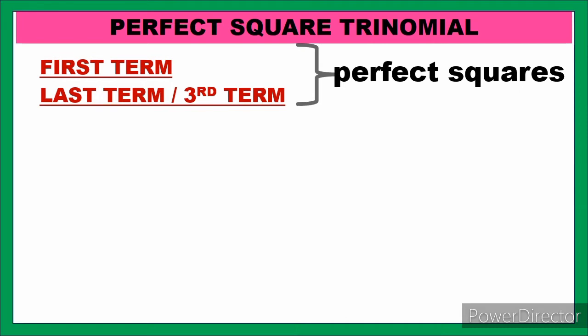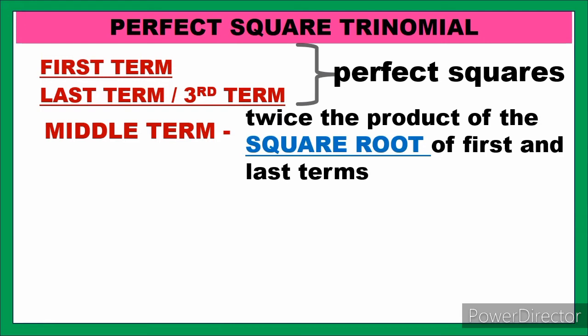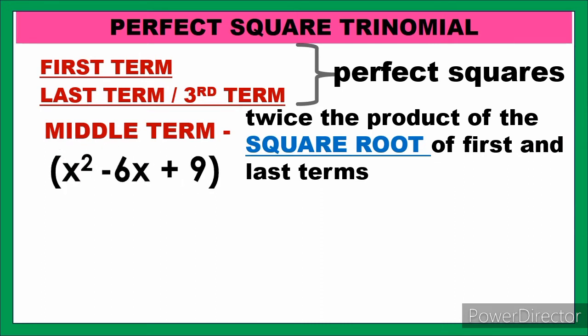The first term and last term of our trinomial must be perfect squares. Also, the middle term of the trinomial must be twice the product of the square roots of the first and last terms. For example, take x² minus 6x plus 9. The first term, x², is a perfect square — check. The last term, 9, is also a perfect square — check.